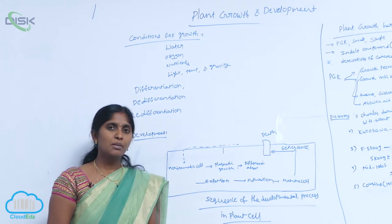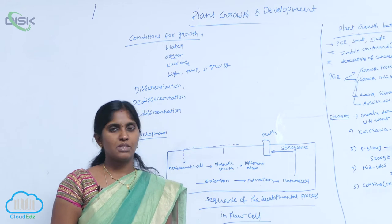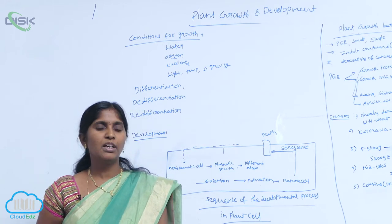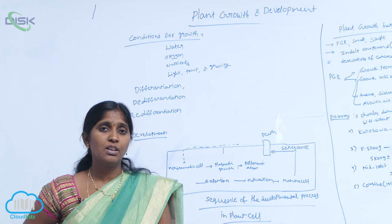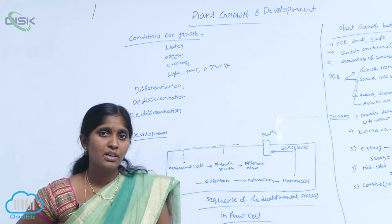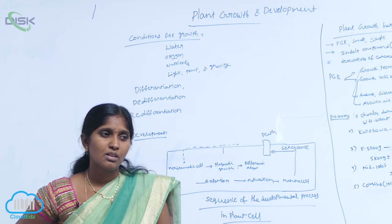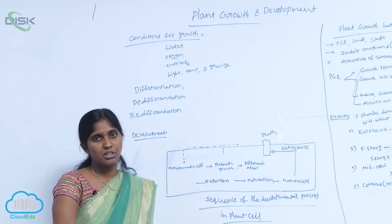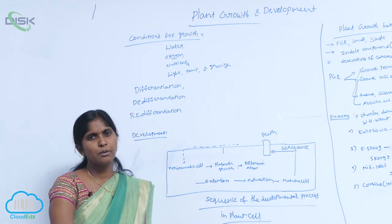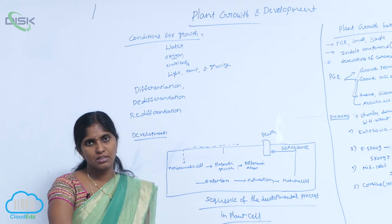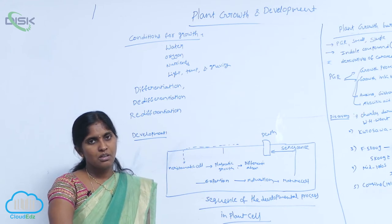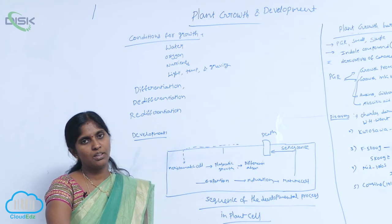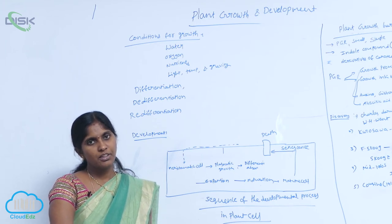For example, take the parenchyma cells. Parenchyma cells are again divided at the leaf level into spongy tissue and palisade tissue. Spongy and palisade tissue are made for photosynthesis. But during secondary growth, they undergo de-differentiation.